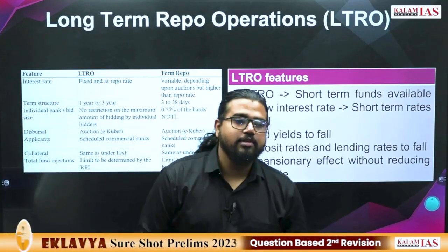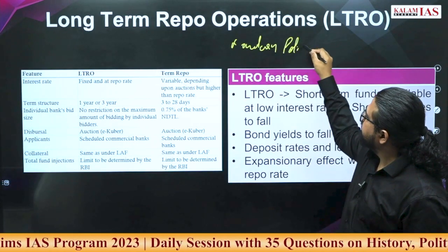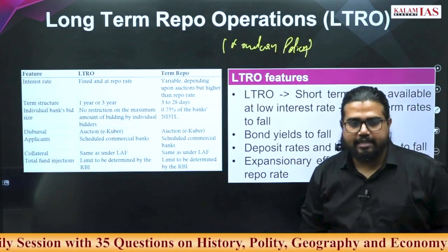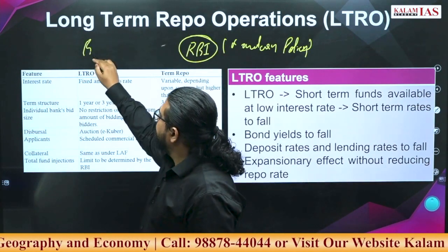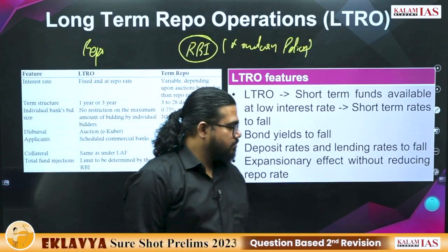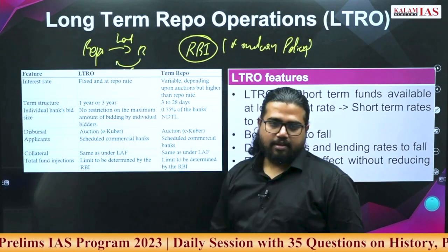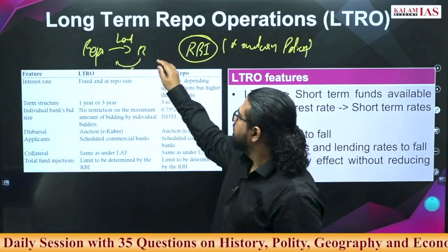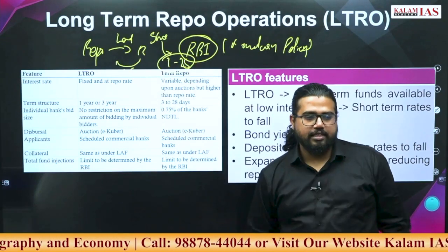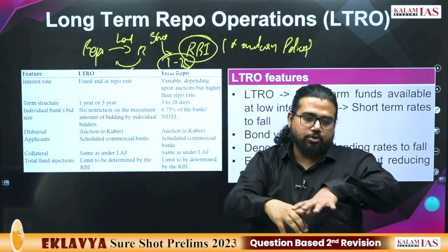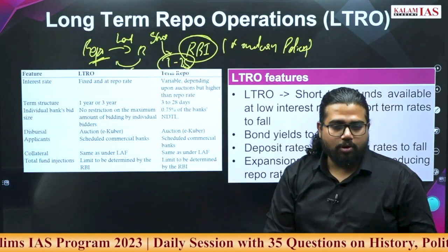Before we begin the external sector, we cover a monetary policy concept we missed — Long Term Repo Operations, or LTRO. In normal repo operations, RBI lends money to banks and takes back government securities, on a short-term basis of 1 to 28 days. MSF also has a 28-day variant. Within this range, RBI does short-term variation to help banks manage short-term liquidity. The repo rate is our benchmark policy rate, correlated to all other rates.